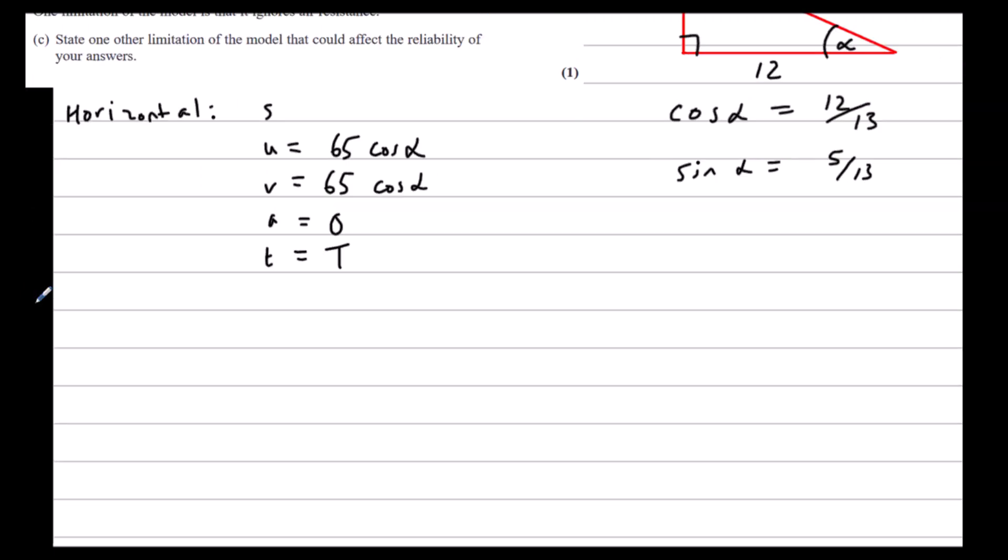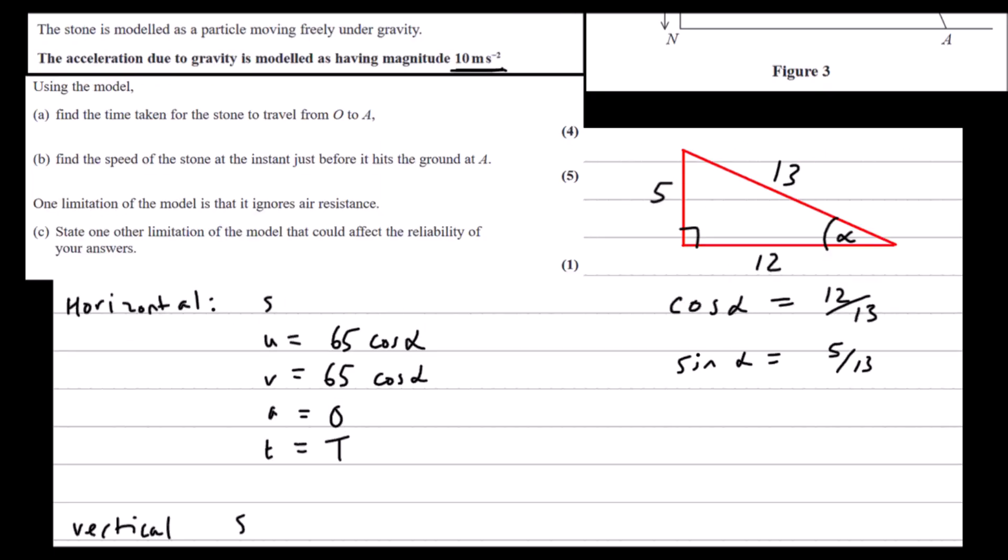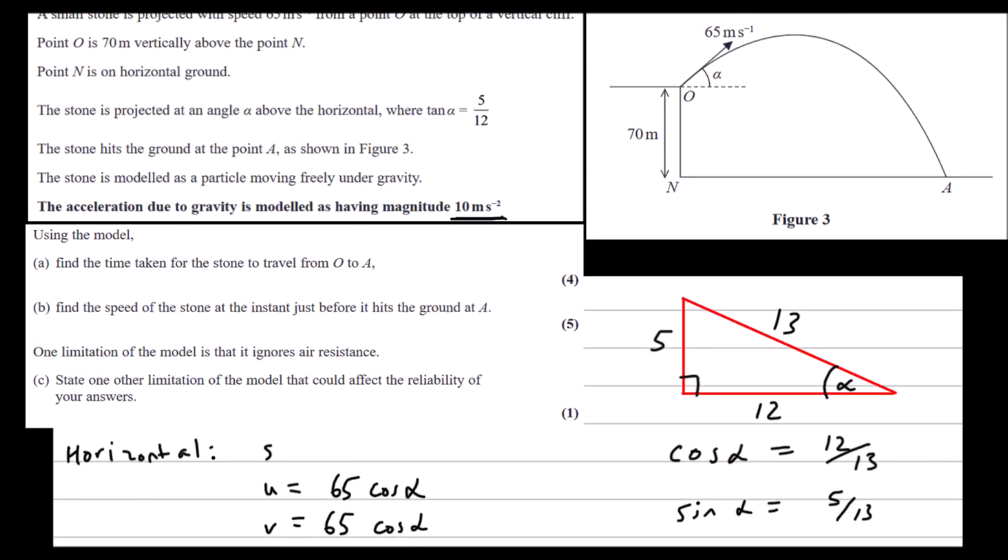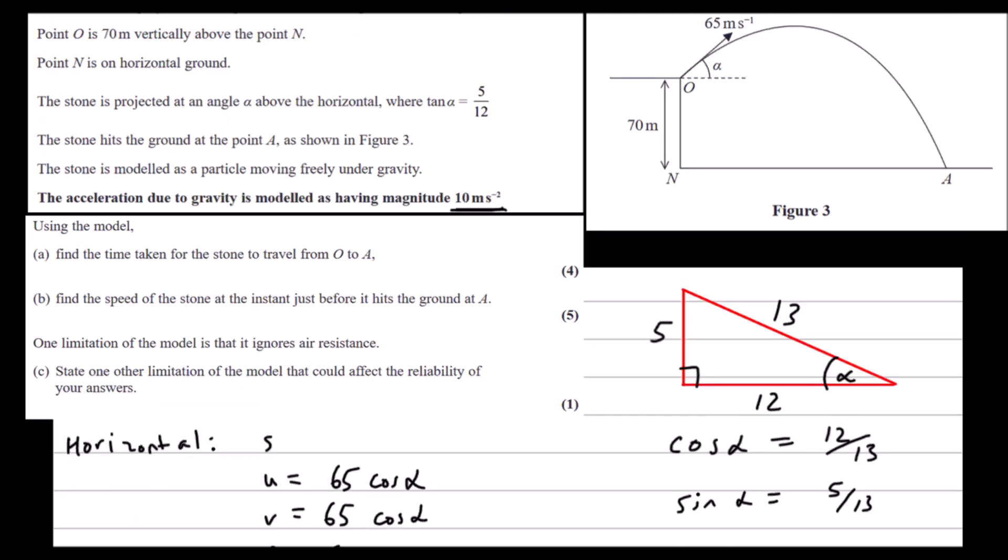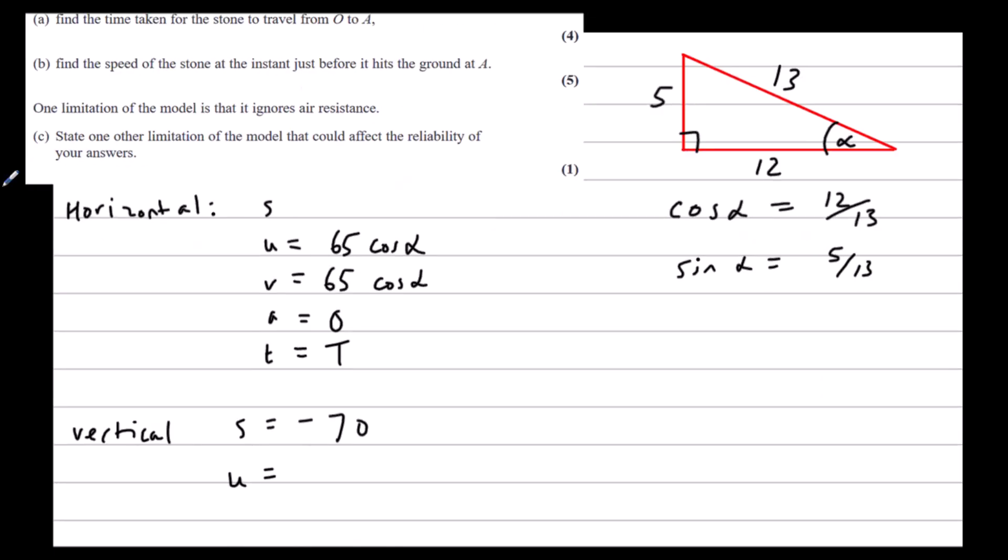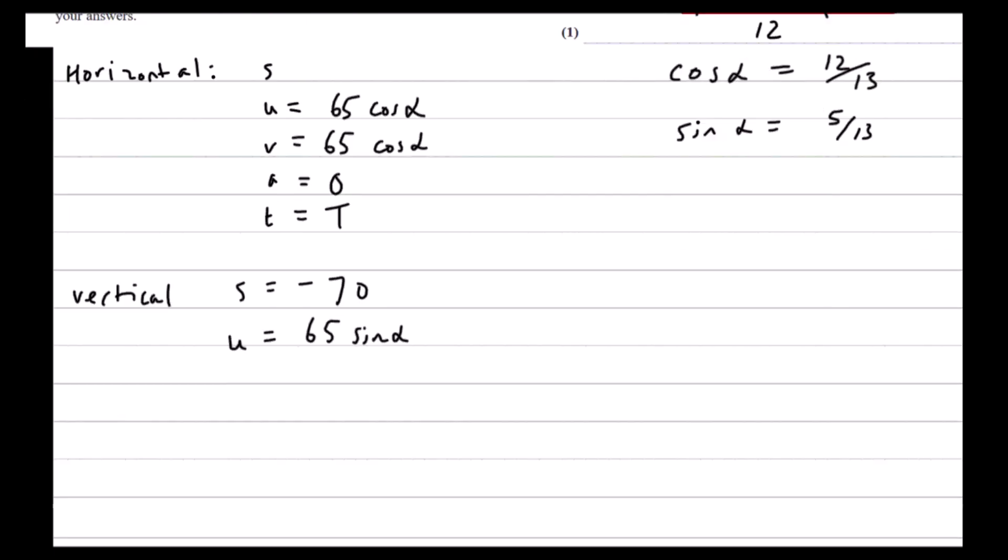Vertically, the distance we know is minus 70, going down 70 meters. The initial velocity is 65 sin alpha. We don't know the final velocity. We know the acceleration due to gravity, 10 meters per second. And we're working out the time. So just from the vertical motion.